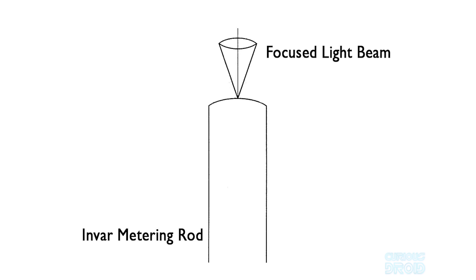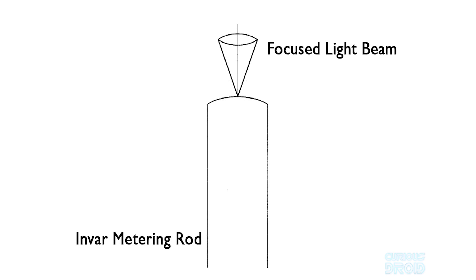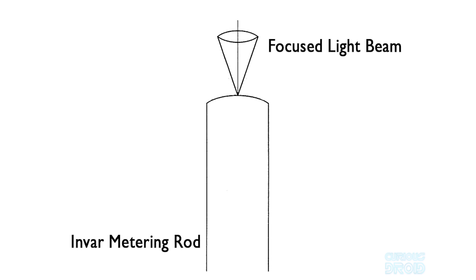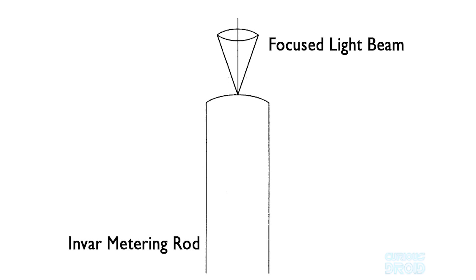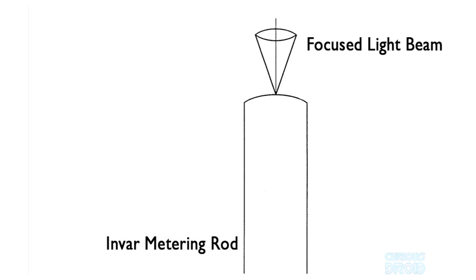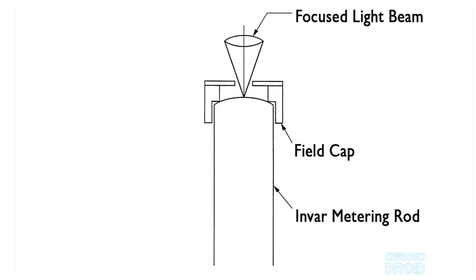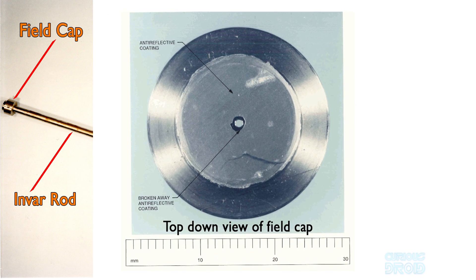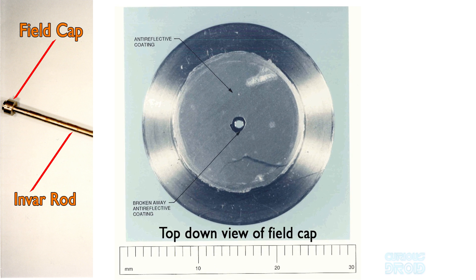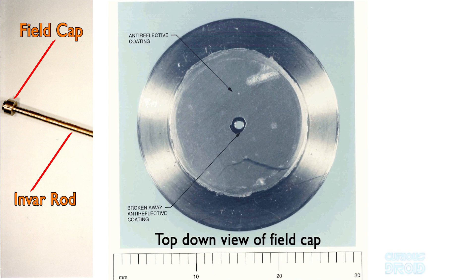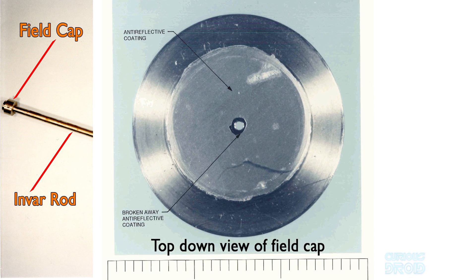As part of this process, a focused beam of light was reflected off the end of the Invar rod. To make sure it was focused exactly on the center of the rod end, field caps were fitted to hold the rods in position laterally. These caps had a hole in the center to allow the focus beam to hit the rod end and a non-reflective surface coating around it.